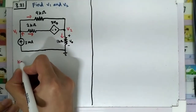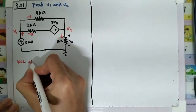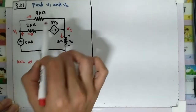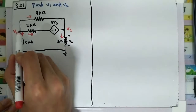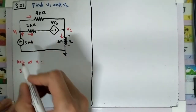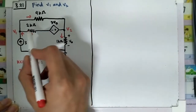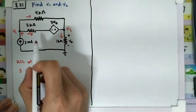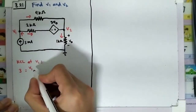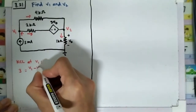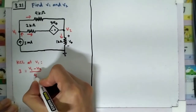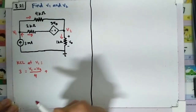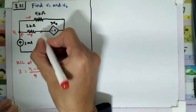We apply KCL at v1. The current that goes in equals the current that goes out. The current going in is only from the current source: 3 mA. The currents going out include this one: v1 minus v2 divided by 4.